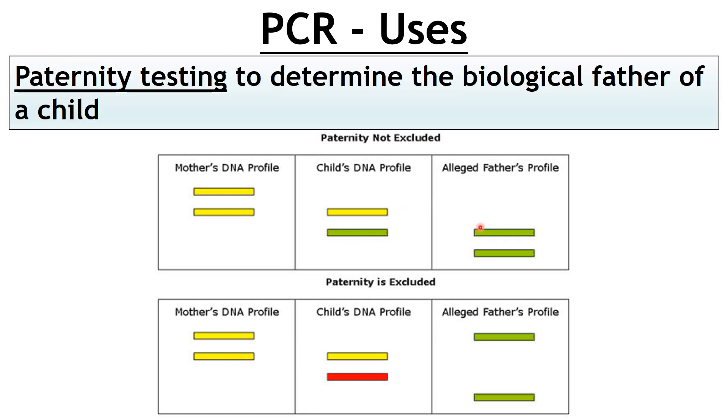PCR can also be used for paternity testing — to determine the biological father of a child. You get 50% of your DNA from your mum and 50% from your dad. Here's a simple diagram showing a mother's DNA profile and the child's DNA profile — you can see there's a match with the alleged father in one case, whereas the other alleged father is not a match. For example, a Spice Girl claimed Eddie Murphy was the father of her child, he denied it, they did the genetic tests, and it was proven true.